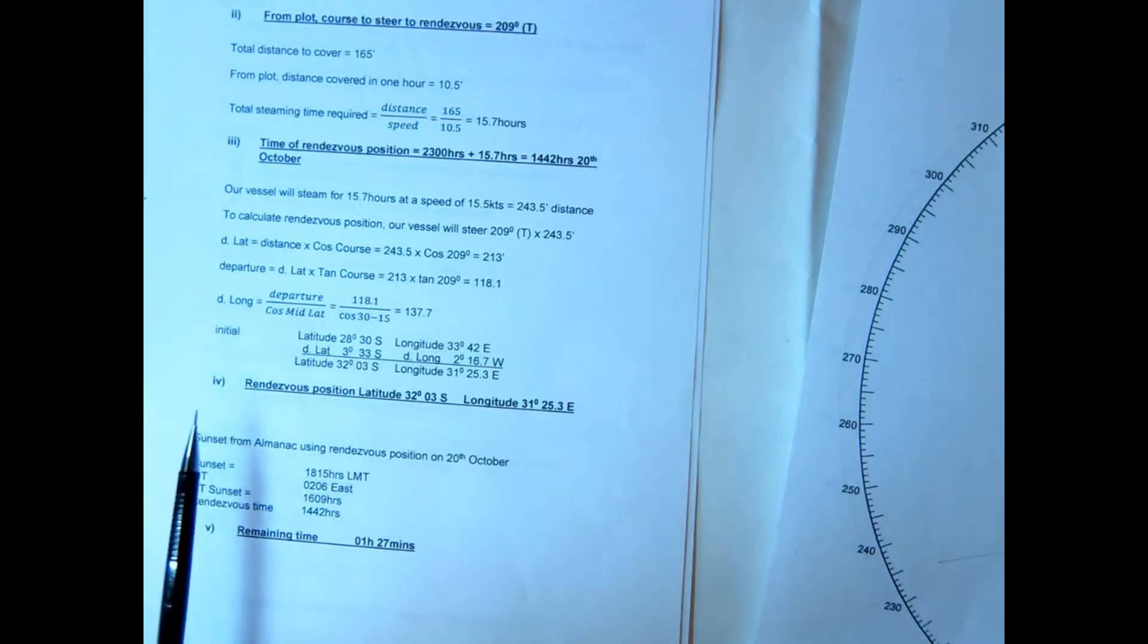I've worked out by plane sailing, could use Mercator of course, our rendezvous position here. I then take that information, look up on the 20th of October sunset, and they are in the nautical local time. By interpolation I get 1815, apply my longitude in time, I get 1609.